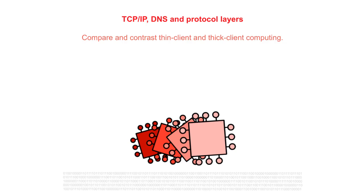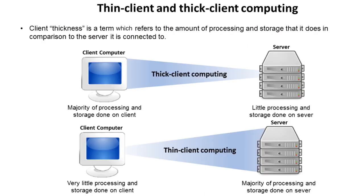In this last video in this section we're going to compare and contrast thin client and thick client computing. Client thickness refers to the amount of processing and storage done in comparison to the server it's connected to. At one end, the client computer does the majority of the processing and storage — this would be a thick client system. The client would have an operating system installed, all the software, all the hardware, and virtually all files stored on its hard drive. The server does little processing and storage at all.